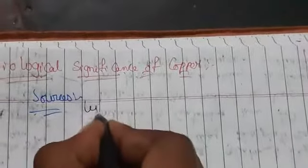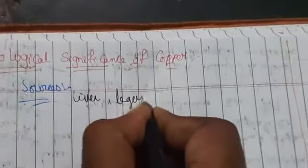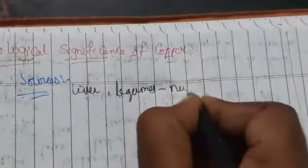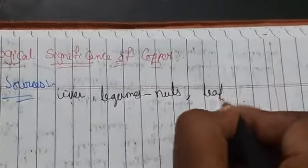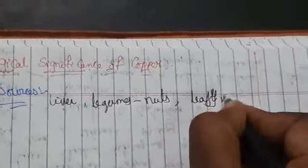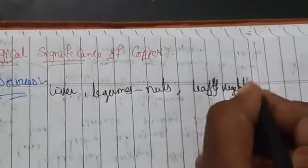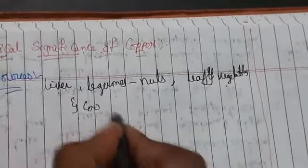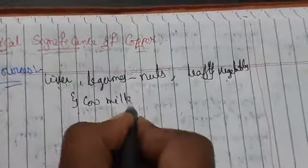Good morning students. Let us see the biological significance of copper. The sources — the food items we have to take to get copper — are liver, legumes, which means nuts, leafy vegetables, and cow milk. After iron and zinc, copper is the most essential element.